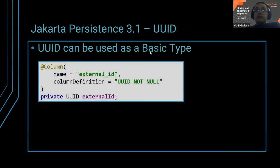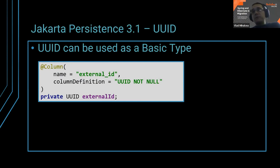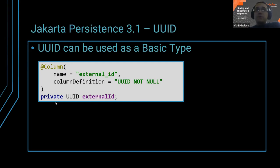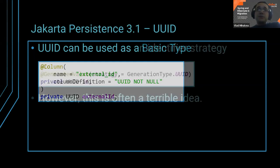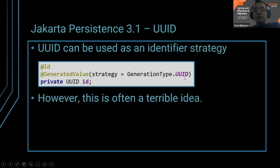Jakarta Persistence 3.0 only changed the namespace, but Jakarta Persistence 3.1 added some new features. One of them looks very appealing but is not very useful: the fact that you can use UUIDs — Java UUID version 4 — as identifiers. You can actually use them even for basic types, but the specification says you can use them as an identifier strategy. That looks very convenient, but in reality it's a terrible idea.